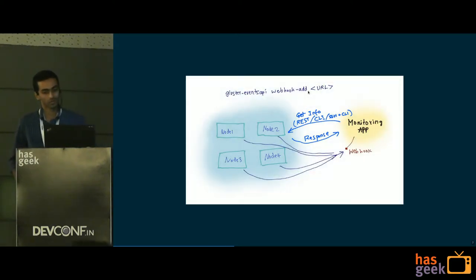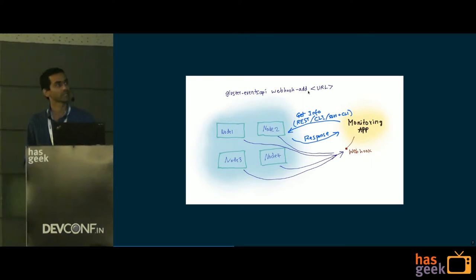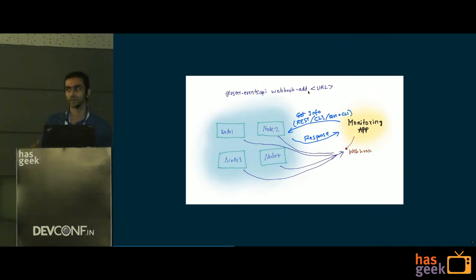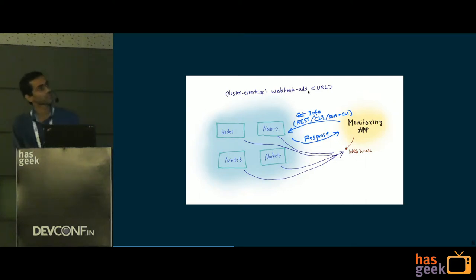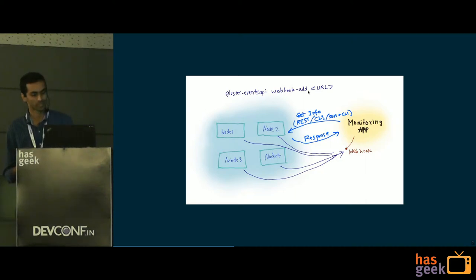The Events API solves this problem by running one daemon called eventsD on all Gluster nodes. This daemon collects local events and pushes them to an external monitoring application via webhook. Whenever an event happens — like a volume being created, a brick going down, split-brain occurring, or geo-replication going faulty — all those events can be pushed to the webhook.